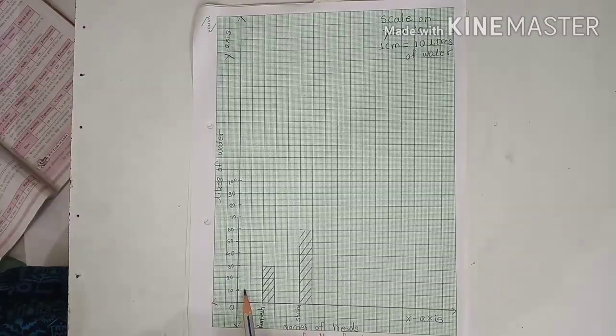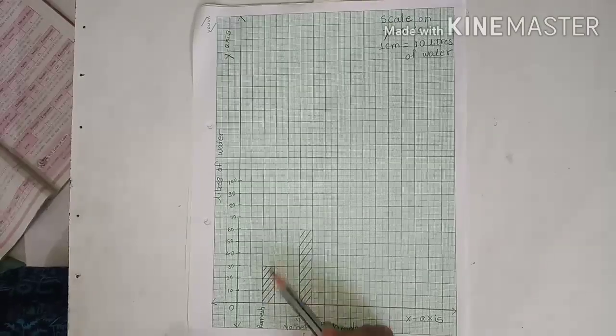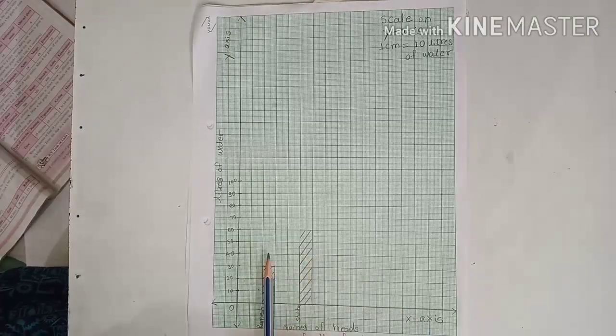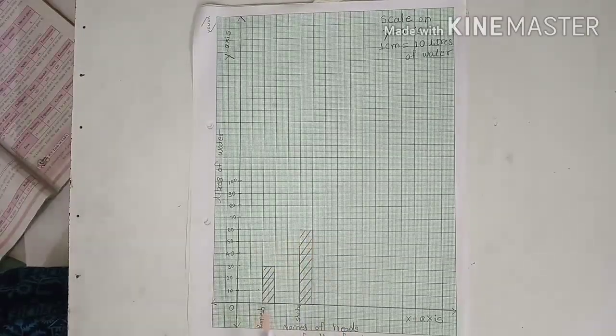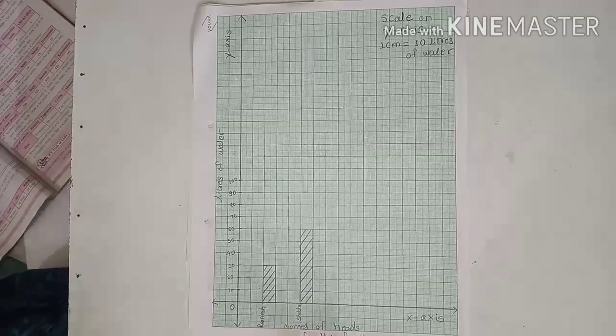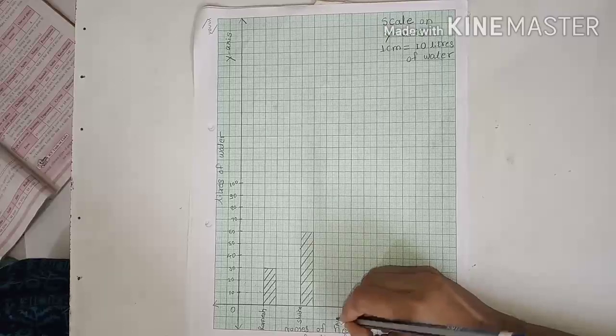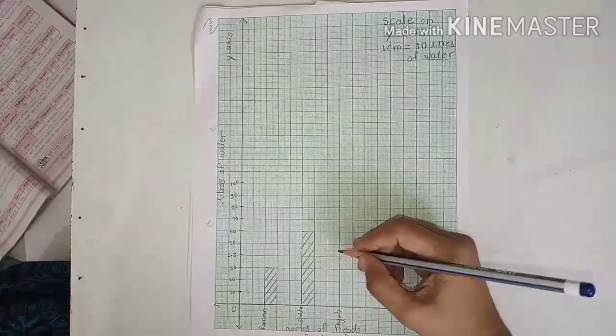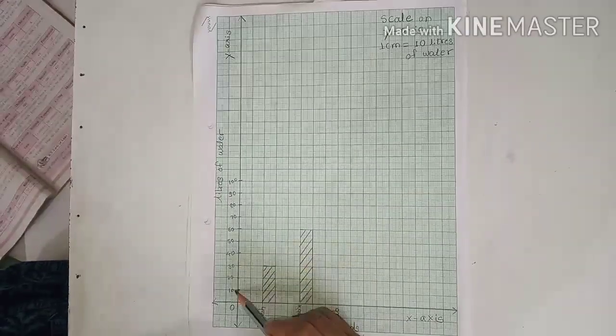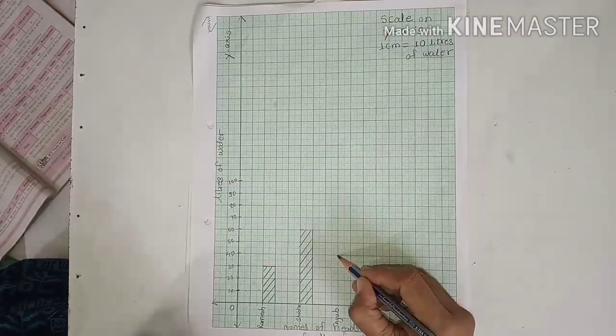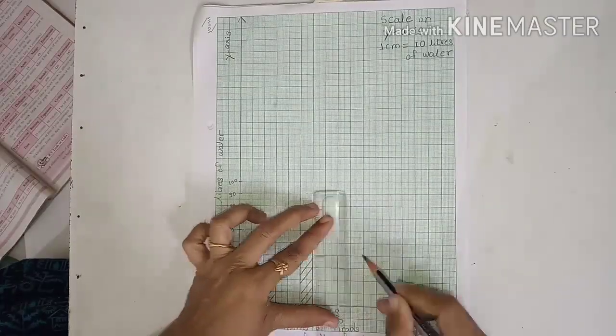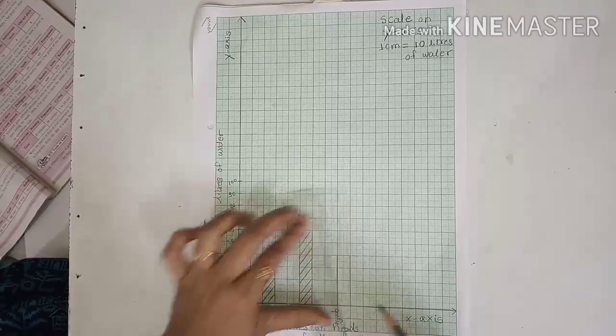Here is a distance. We have to keep it the same. We have to keep equal distance between two bars. This is one centimeter. This is the distance we have to keep. Third one, Arun. His family uses 40 liters of water. So 40, here in 20, 30, 40. Okay.